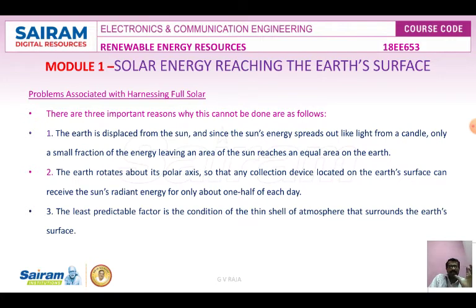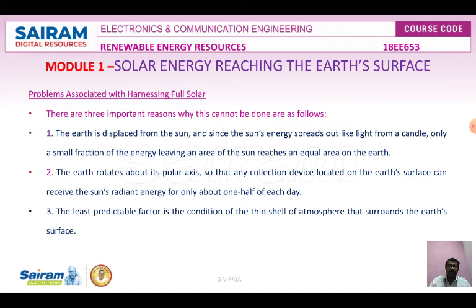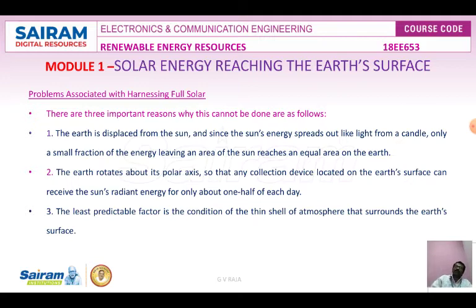Second, the Earth rotates about its polar axis, so any collection device located on the Earth's surface can receive solar radiation energy for only half of the day. Third, the least predictable factor is the thin shell of the atmosphere surrounding the Earth. The atmosphere accounts for a 30% reduction of Sun energy, meaning only 70% of the Sun's energy can be obtained. Furthermore, our devices can absorb only about 40% of that energy, and weather conditions may also stop minimal solar radiation from reaching the Earth's surface for many days in a row.